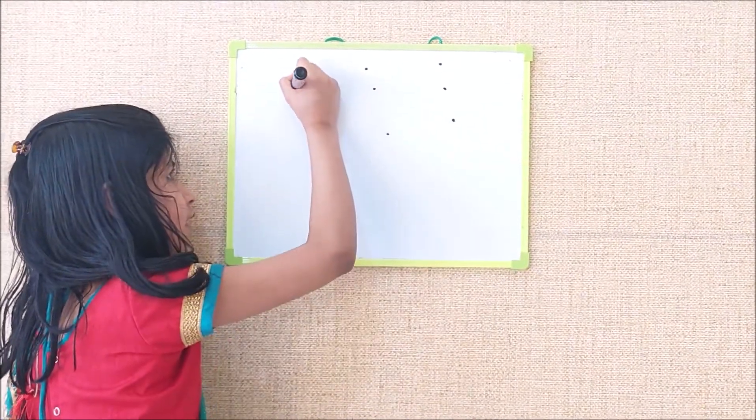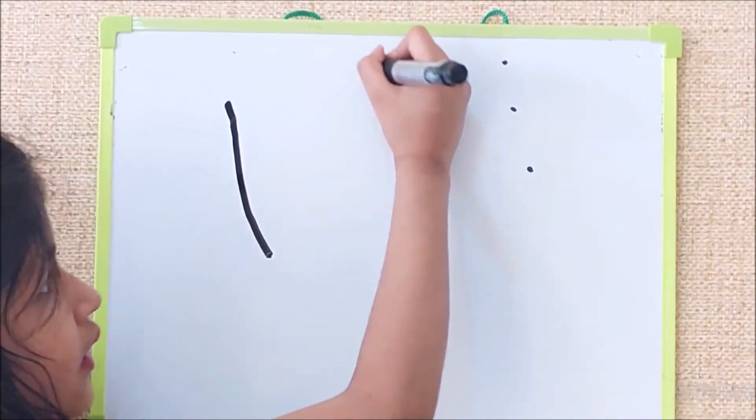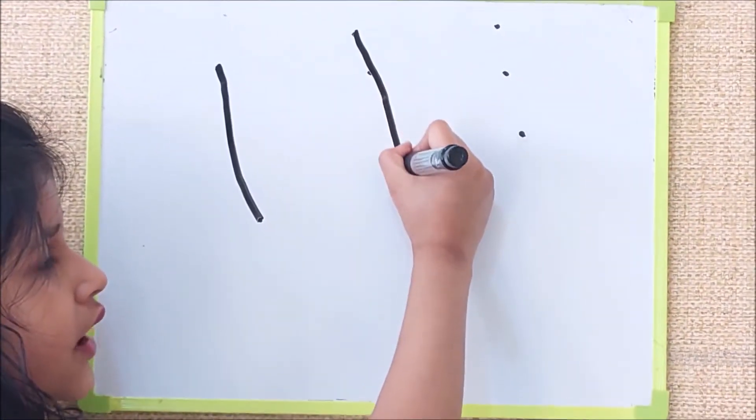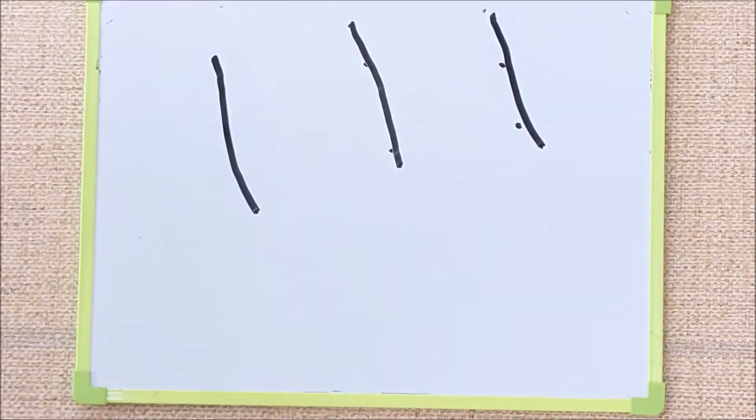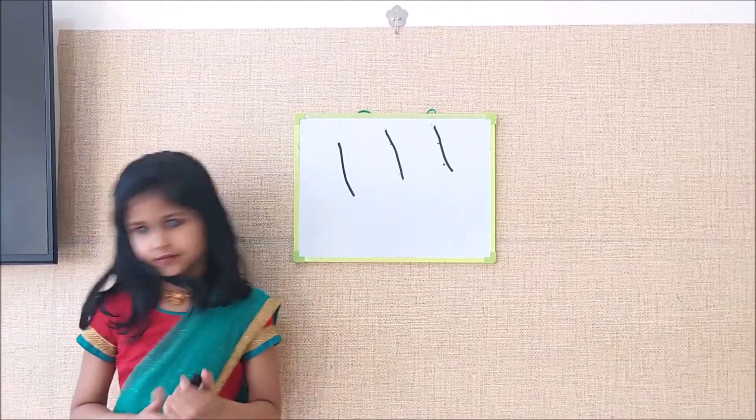So left to right. Left to right. Left to right. Okay? Now we can write without dots.